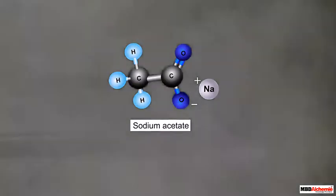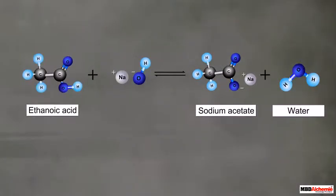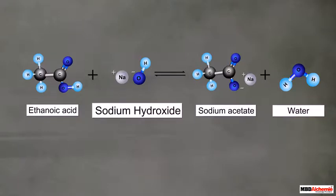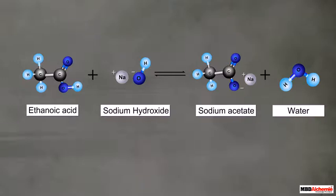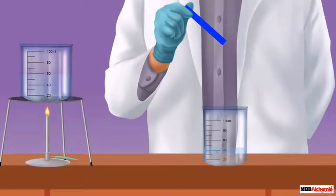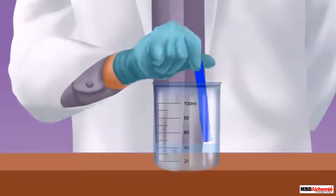During this reaction, the sodium salt is formed along with water. This acidic nature can also be confirmed by the litmus paper test. Its solution turns blue litmus paper red.